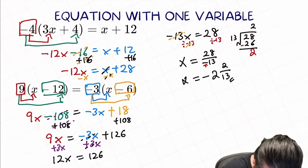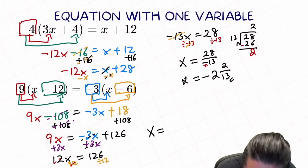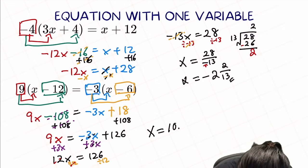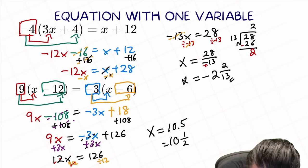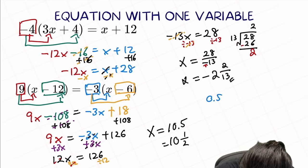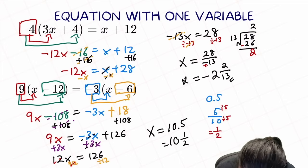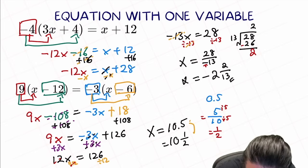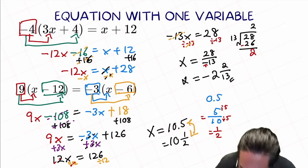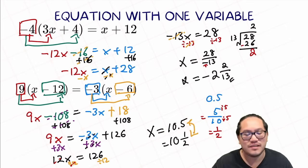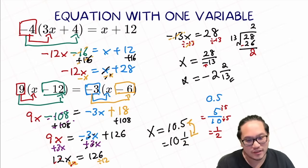And the final step — final isolation: 12x, so we divide by 12 on both sides. We're left with x equal to 126 divided by 12, which is 10.5. The answer can also be written as 10 and 1 half. When converting the decimal 0.5 to a fraction, it's 5 over 10, and simplified by dividing by 5 top and bottom, you get 1 half. Make sure you know that these two answers are exactly the same — just presented in a different form. Know how to convert between decimal and fraction forms.